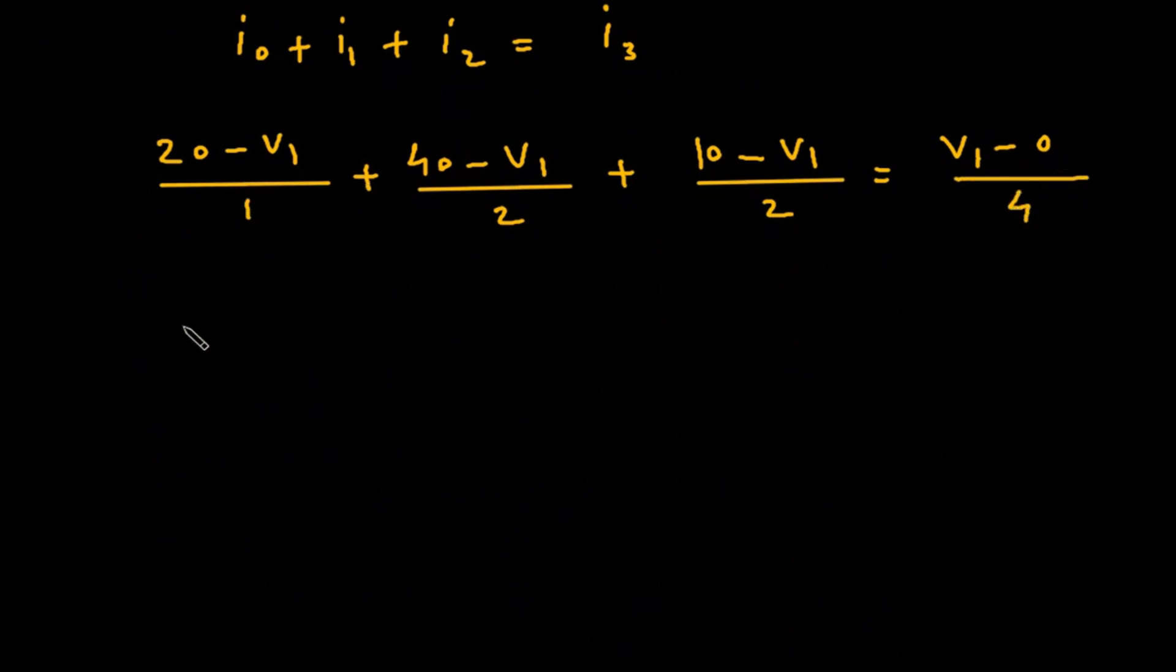Simplifying: 20 - V₁ plus 20 - V₁/2 (from 40 - V₁ over 2) plus 5 - V₁/2 (from 10 - V₁ over 2) equals V₁/4.